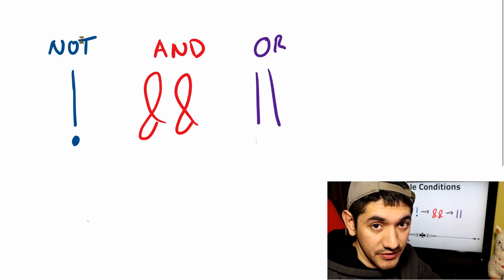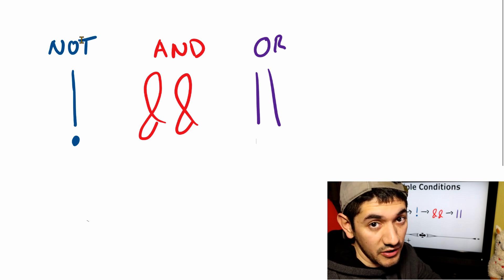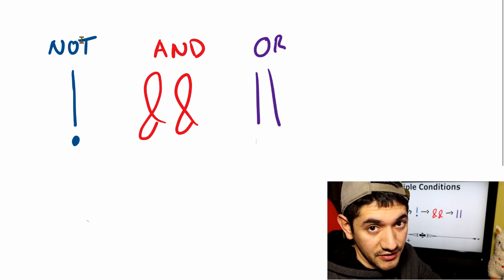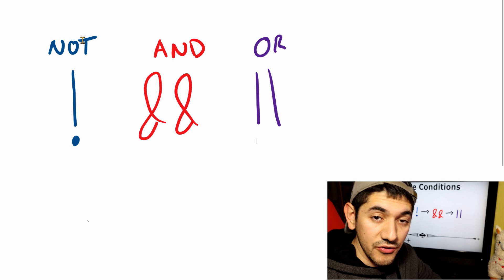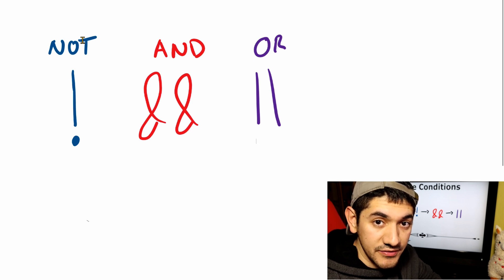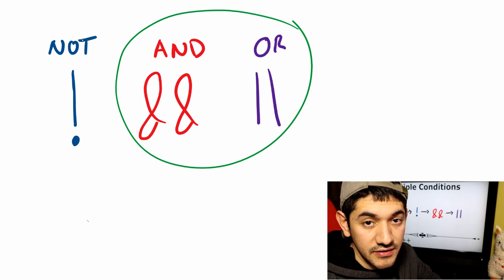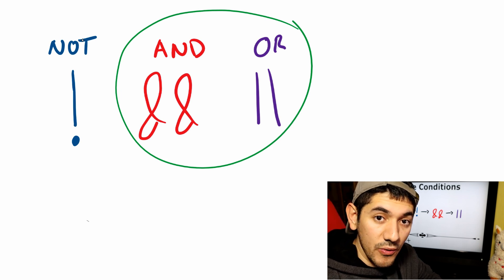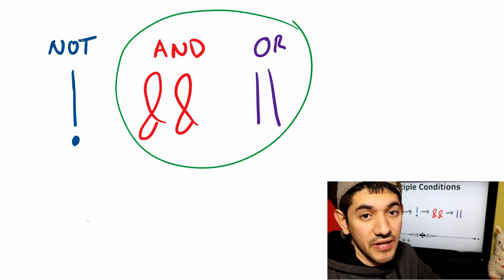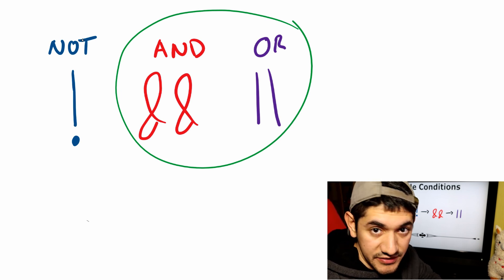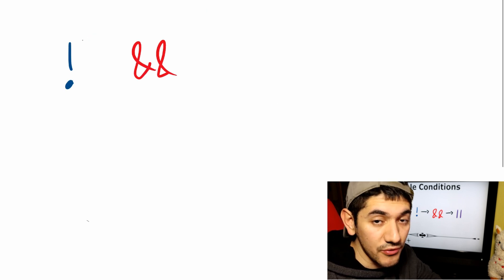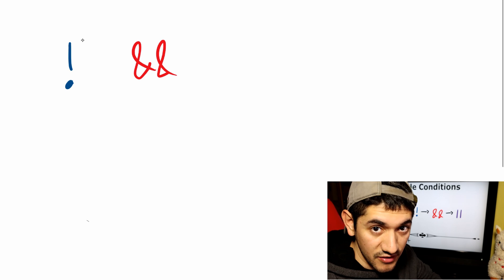Welcome, let's talk about multiple conditions. We learned how to manipulate conditions by using the conditional operators, and we're able to combine two conditions using the AND or the OR operators. Now what we want to learn is what happens when we have many conditions — like five, six, or seven — and we need to chain them in a combination of multiple conditional operators.